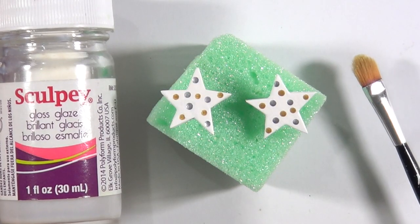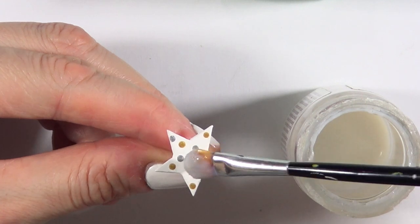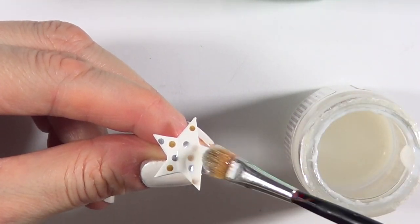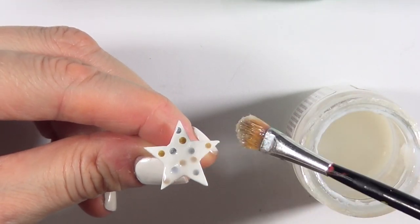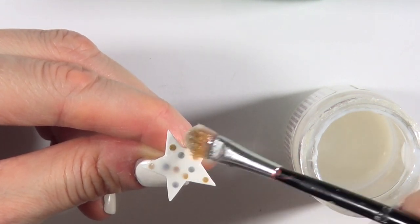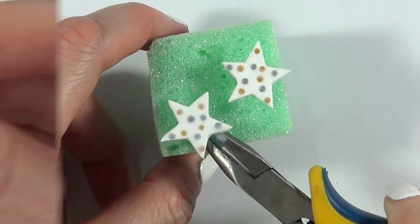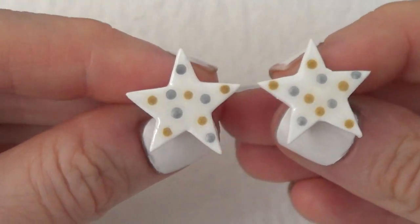Once they are dry, I'm just going to be adding some gloss. I'm using the Sculpey one, giving them a couple of coats until they are shiny and protected. You can use some top coat for nails as well. I just prefer to work with this because it dries faster and it doesn't smell as much. This is pretty much it for these dainty ones.